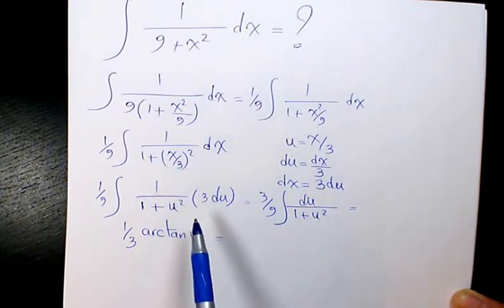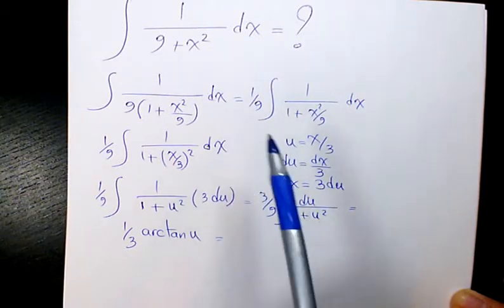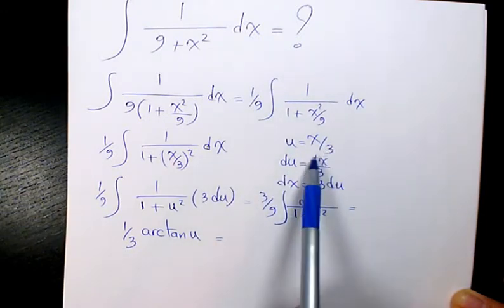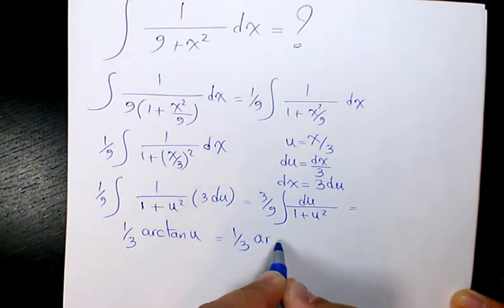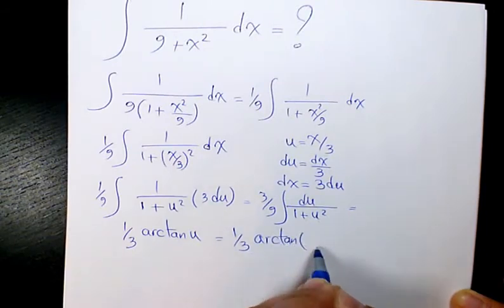1/3 arctan(x/3) + C. This is the final answer. I hope you enjoyed this video.